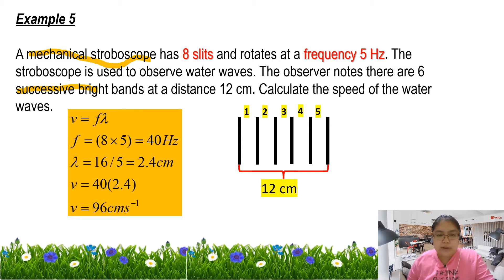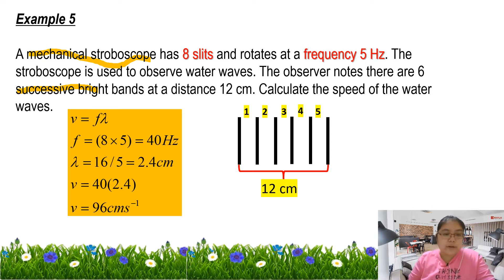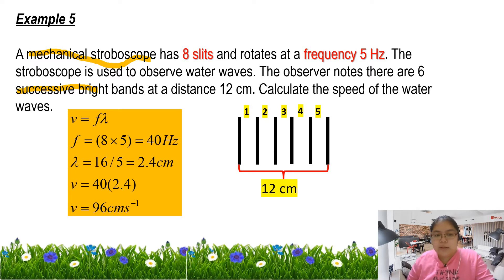So we just apply frequency 40 hertz. Lambda is 12 cm over 5, which is 2.4 cm. After that, 40 multiplied by 2.4. So the answer is 96 cm per second.